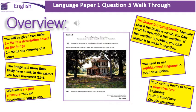Here's an overview. You will be given a choice of two tasks. The first one asks you to write a description based on the image, just like the example shown. The second option will ask you to write the opening or a part of a story, and we strongly recommend that you always choose the description. The image that you receive will more than likely have a link to the extract that you have read whilst answering questions 1 to 4, meaning that you can recycle some of the ideas from that.